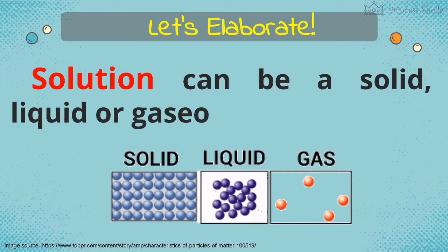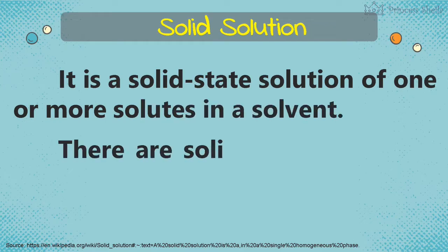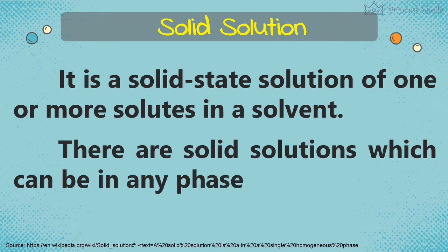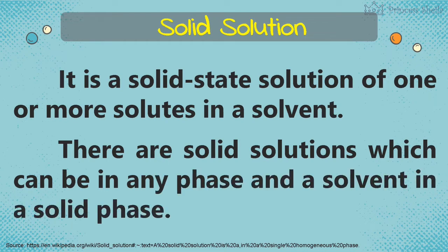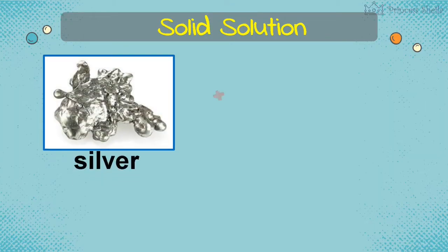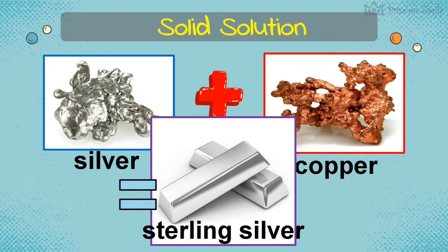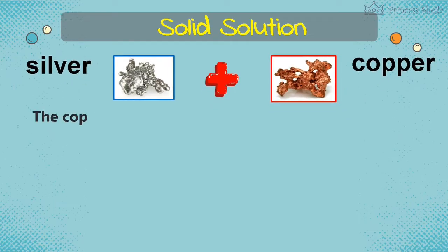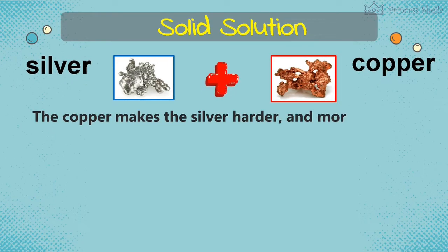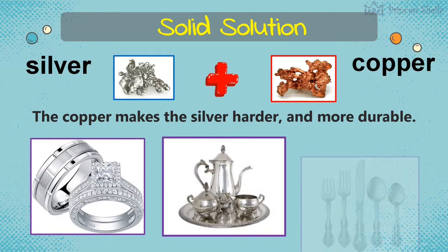A solution can be in a solid, liquid, or gaseous phase. A solid solution is a solid-state solution of one or more solutes in a solvent. The mixture of silver and copper is an example of a solid solution — the copper makes the silver harder and more durable, making it much better to work with. It is used to make jewelry, expensive tableware, and utensils or silverware.